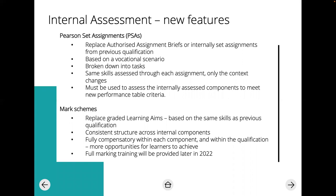The mark schemes are fully compensatory within each component. As a teacher, I really welcome this. Some learners might have really good ability to perform with great technical ability, but be unable to write at that same high level to explain what they've done. Currently, with pass/merit/distinction, if they get a pass on explaining but a distinction on performing, they are capped at a pass. Because it's now compensatory, they might get fewer marks for explanation but their performance marks will raise the overall mark significantly. Full marking training will be provided later on in 2022.